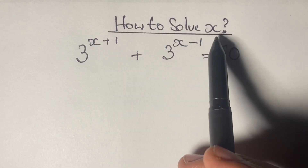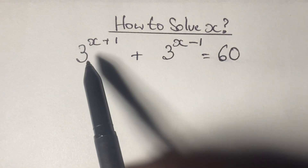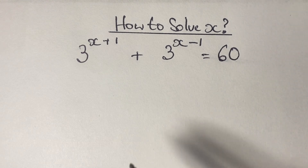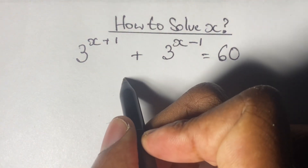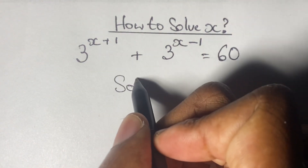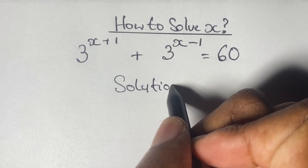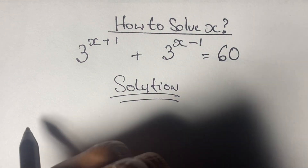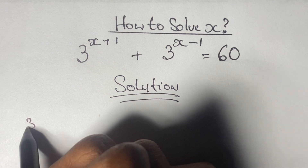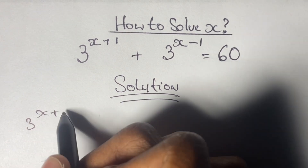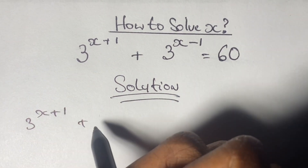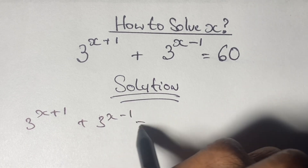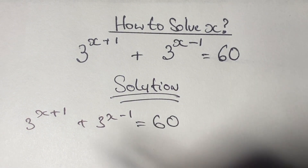Greetings again everyone, welcome back to my channel. Here we're going to solve x in this algebraic exponential equation where we have 3 to the power of x plus 1, plus 3 to the power of x minus 1, is equal to 60. We're just going to have our solutions down below here. You can pause this video and try this one out, or check out my playlist on how to solve other algebraic exponential equations. Now without further ado, let's go ahead and solve this equation.